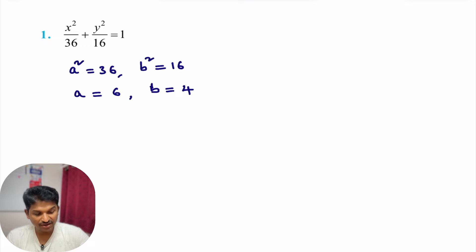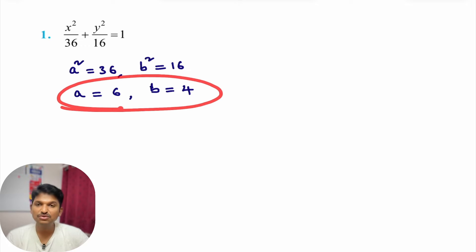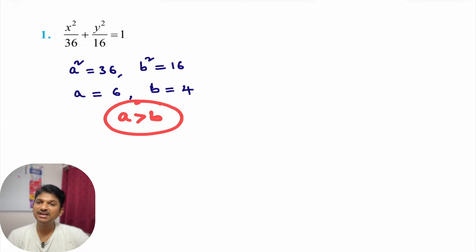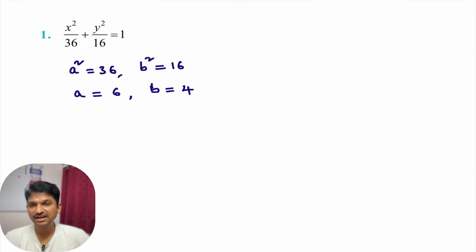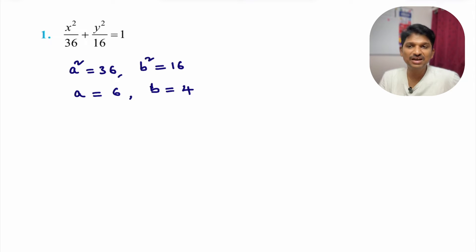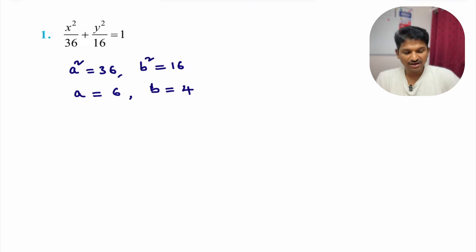After getting a and b values, you identify whether a < b or a > b. Here, a is greater than b, which means this is the standard form — the first type of ellipse. For the standard form of ellipse, you need to know the formulas: length of major axis, length of minor axis, foci — all those things we already discussed.